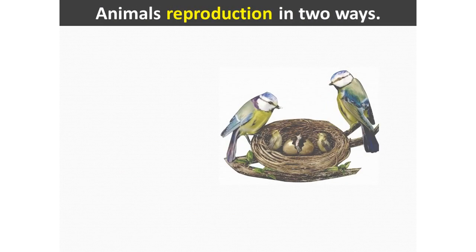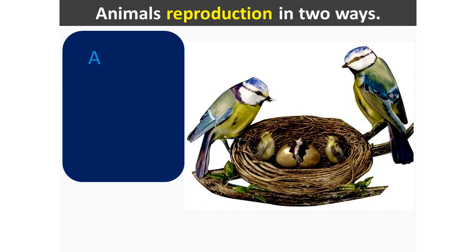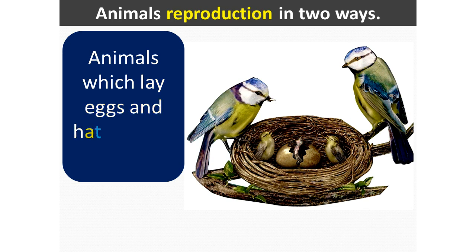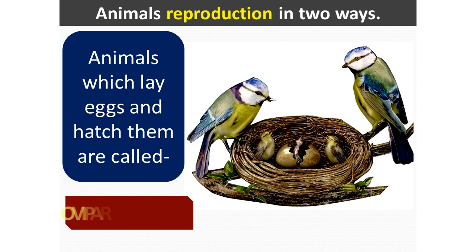Animals reproduce in two ways. Animals which lay eggs and hatch them are called oviparous.